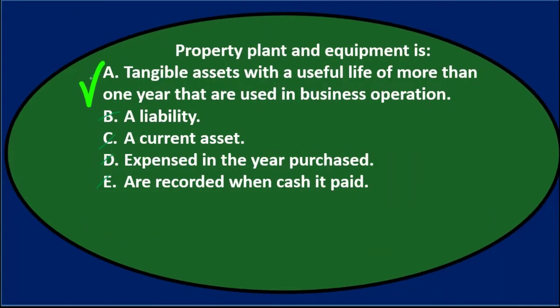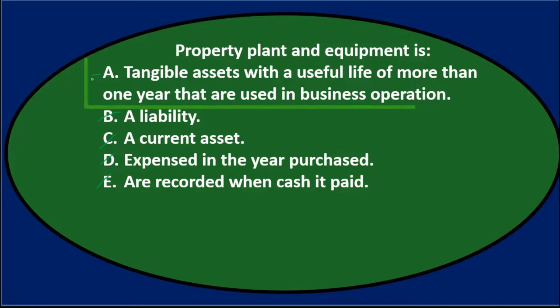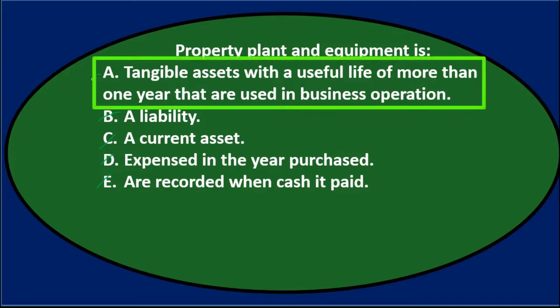Question and answer: Property, plant, and equipment is A — tangible assets with a useful life of more than one year that are used in business operations.